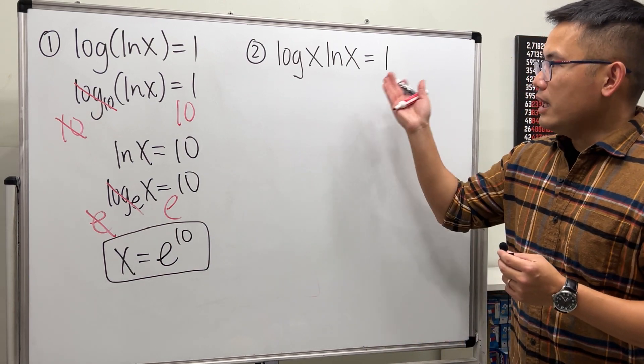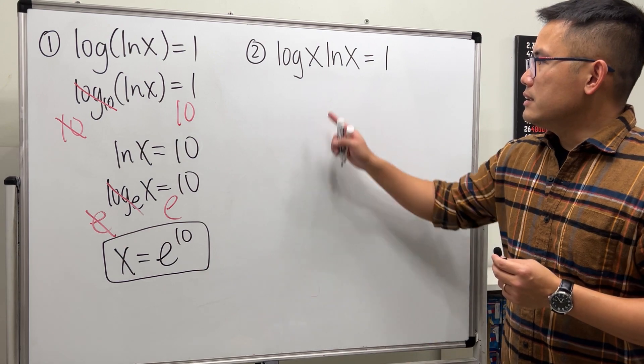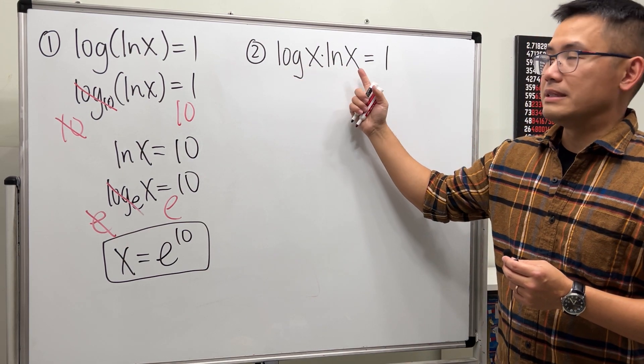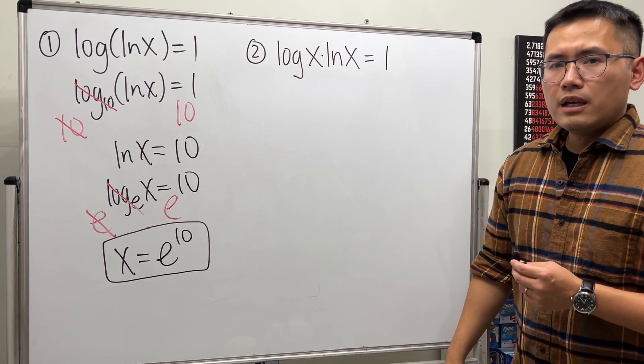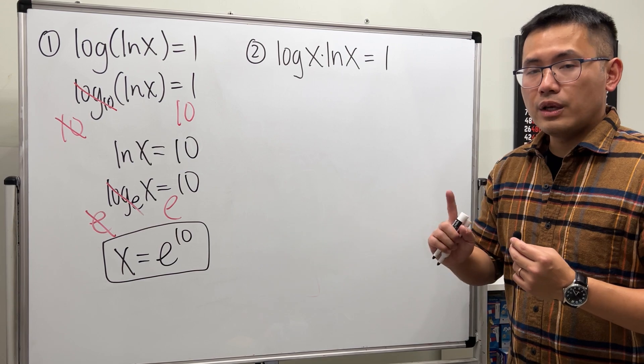Now take a look for the second one. Here this is a multiplication of the first log base 10 of x and then this is log base e of x. So what we want to do is we want to make sure that they have the same base and we can use the change of base formula.